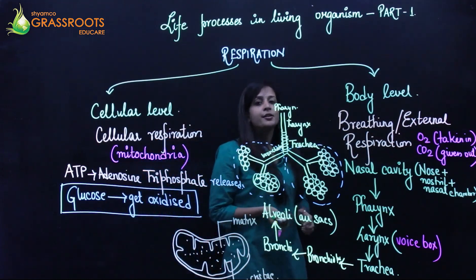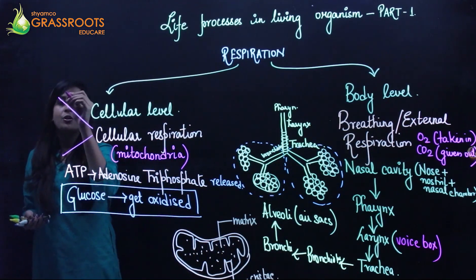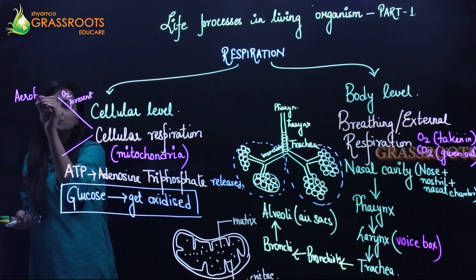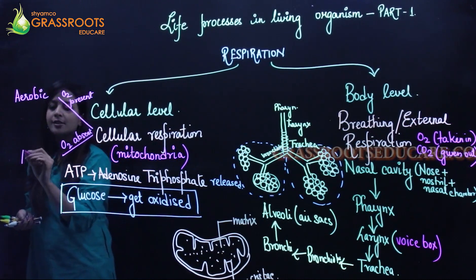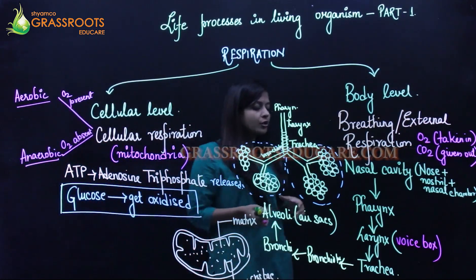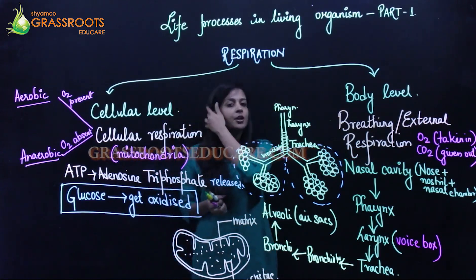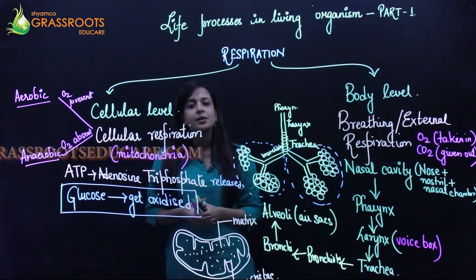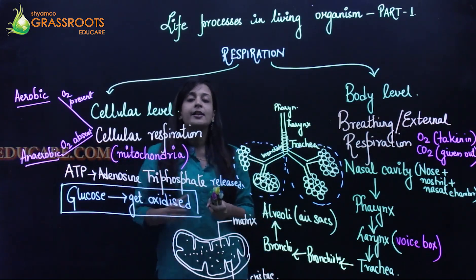Cellular respiration mainly requires oxygen. If this respiration occurs in the presence of oxygen, it is known as aerobic respiration. If it occurs in the absence of oxygen, it is known as anaerobic respiration. Most animals around us, including humans, undergo aerobic respiration — in the presence of oxygen. However, many bacteria and lower groups of organisms cannot survive in the presence of oxygen, so they respire anaerobically — in the absence of oxygen.